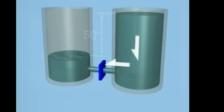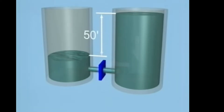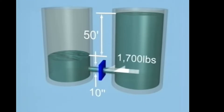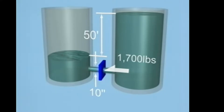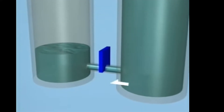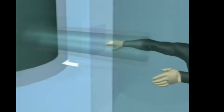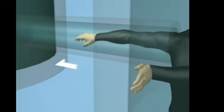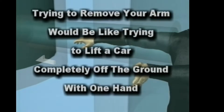If you're wondering how strong the force can get, here's a clip from the original Delta P video: if the difference between the depth of water is 50 feet and the diameter of the pipe is 10 inches, the force of water exerted on the valve is nearly 1,700 pounds. If the valve was suddenly opened and your arm was near it, it would be sucked into the hole instantly — trying to remove your arm would be like trying to lift a car completely off the ground with one hand.